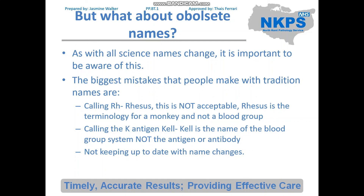As with all science, names change. The biggest mistakes people make with traditional names are: calling RH 'Rhesus' — this is no longer acceptable, as Rhesus is terminology for a monkey and not a blood group; calling the K antigen 'Kel' — Kel is the name of the blood group system, not the antigen or antibody; and not keeping up to date with name changes — for example, the first antigen in the P1PK blood grouping system has had its name changed a couple of times.